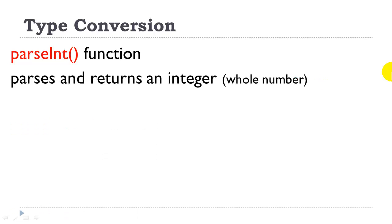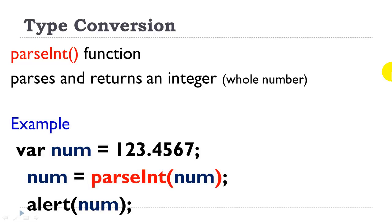So let's take a look at the parseInt function. In our example, we have a value for the variable num. In our second line of code, we are using the parseInt function. Notice it takes a parameter, which is the variable that we want to parse, essentially. So we are performing that function and storing the new value back into the original variable. If we were to test that value using an alert, we would see that the result is one, two, three.